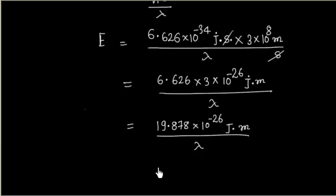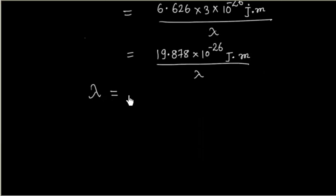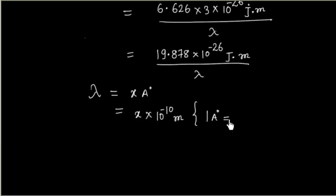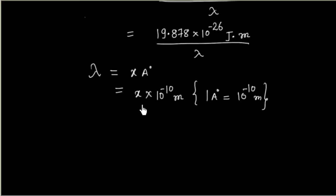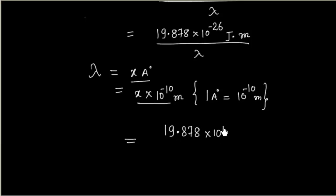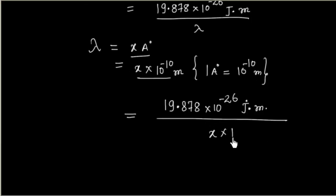Now let us say λ is given in angstroms — λ is x angstroms. We can write x × 10⁻¹⁰ meters, because we know 1 angstrom = 10⁻¹⁰ meters. So if I put this value into the formula, I will have 19.878 × 10⁻²⁶ Joule·meter divided by x × 10⁻¹⁰ meters.